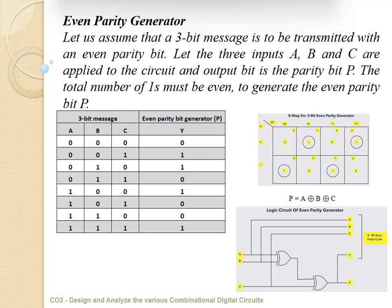If we apply K-map simplification to the parity bit, we obtain P = A XOR B XOR C. The logic circuit of the even parity generator is as shown in the figure.